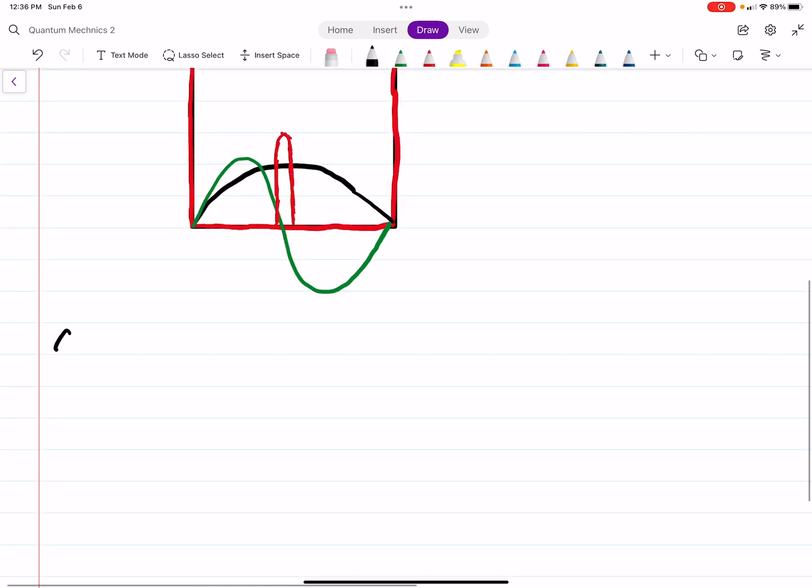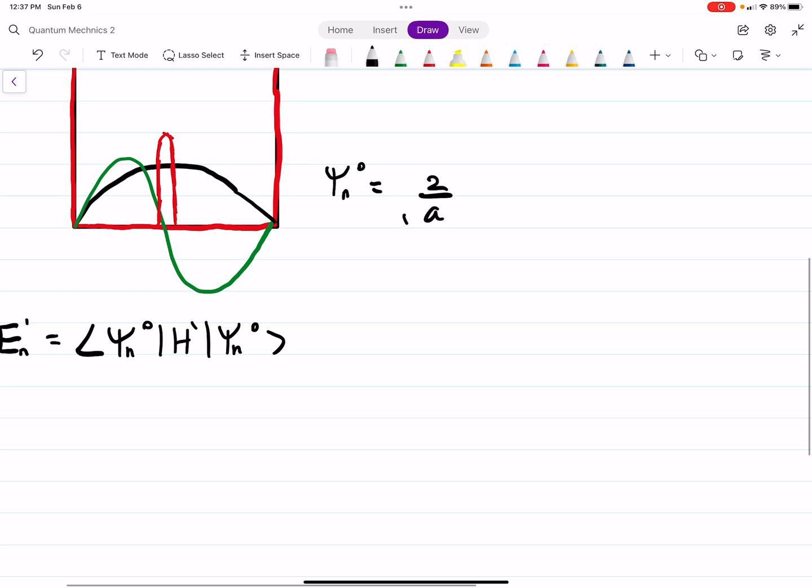So part A. The correction to our energy, the first order correction, is psi sub n 0, H prime, psi sub n 0. Now psi sub n 0 would be the unperturbed, what we're using as our baseline. So if you remember from the infinite square well, the wave function is the square root of 2 over A, and then sine of n pi x over A.